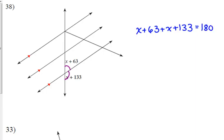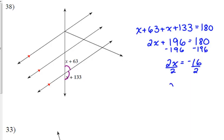180. Oh, this is number 38, apparently, on your paper. So let's solve that. x plus x gives us 2x. 63 plus 133 is 196. Thank you. So we need to move the 196 to the other side. 2x is equal to negative 16. Divide by 2. x is negative 8.